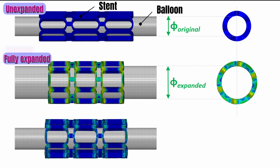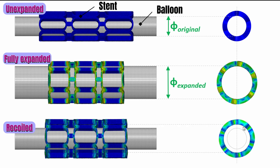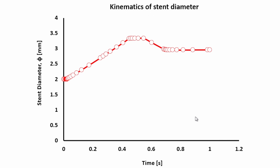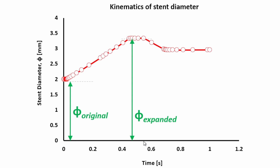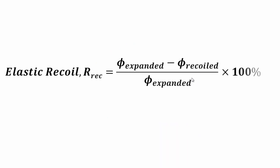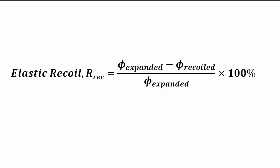The third stage is when there is a recoil — you've removed the loading and reversed the pressure, and the stent recoils back. The diameter associated with that recoil position is called phi recoil. With these three diameters, we can put together the kinematics of the stent diameter as a function of time. The elastic recoil calculation is: expanded diameter minus recoil diameter, divided by expanded diameter, times 100, giving radial recoil as a percentage.